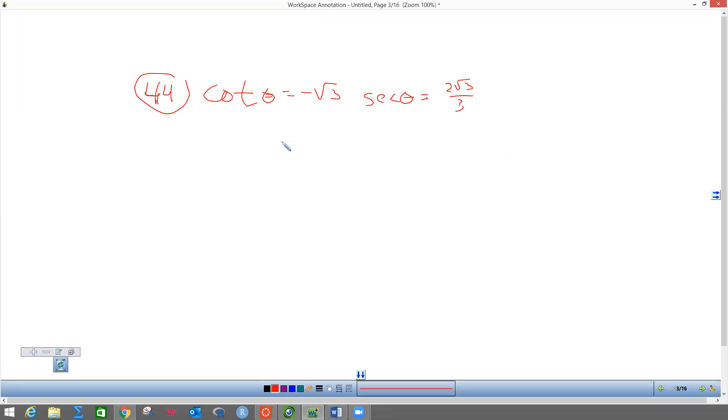This is number 44 on the worksheet. I'm trying to find where cotangent equals negative radical three and secant equals 2 radical 3 over 3. Just like the last problem I did not film—I forgot to hit record—you're supposed to know these things right here.